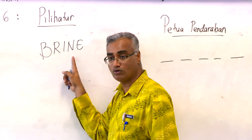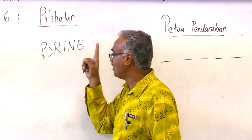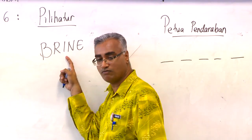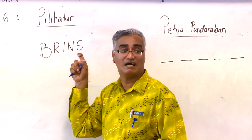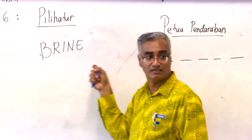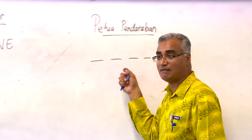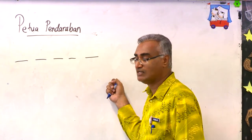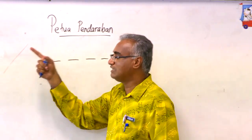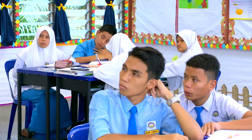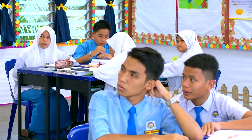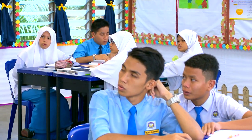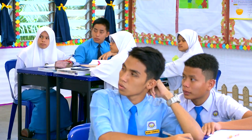Sebab ada 5 huruf, maka kita perlu 5 petak. Kalau ada 6 huruf atau 6 digit, kita perlukan 6 petak. Kalau 7 digit, berapa petak? 7 petak, dan sebagainya.